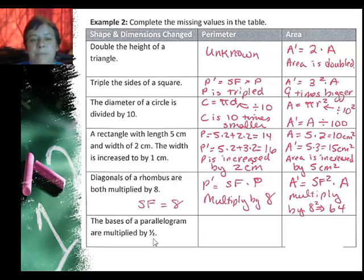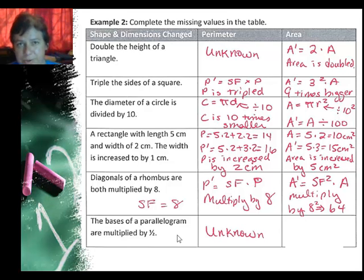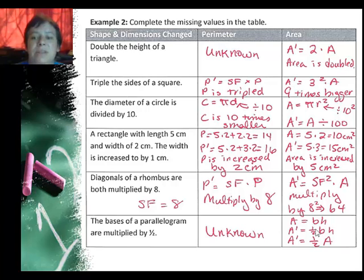The bases of a parallelogram are multiplied by one-half, so both the top and bottom are half the original size. The effects on perimeter won't be fully known unless we know the actual side lengths. The area, on the other hand, since it's multiplicative, I can just take that half — if I did one-half times the base, you can see I now have half of the old area.